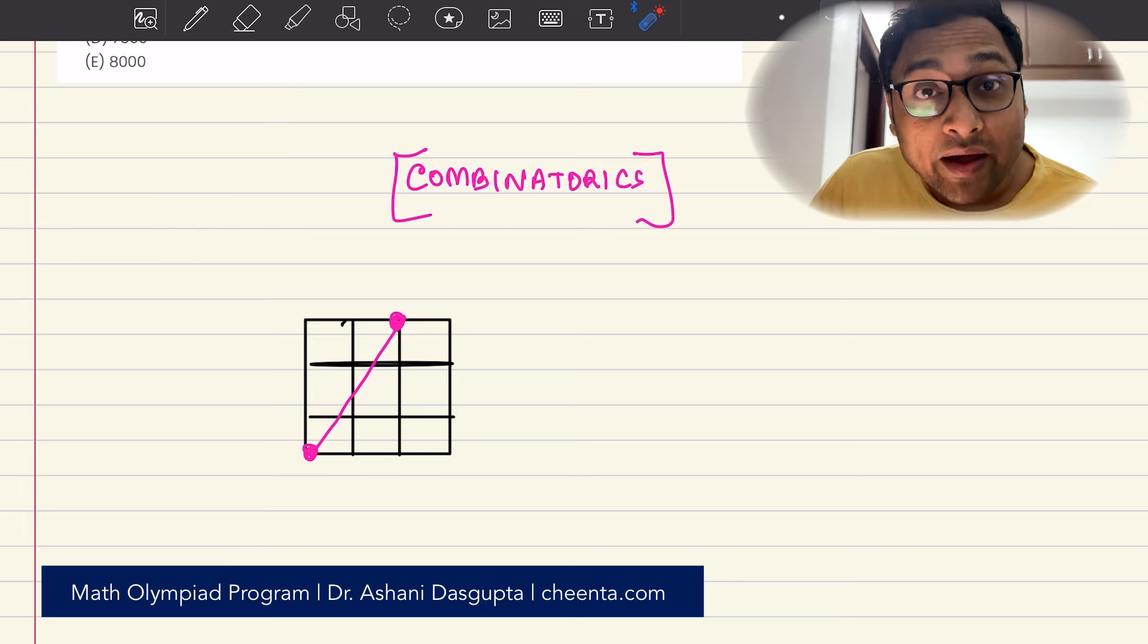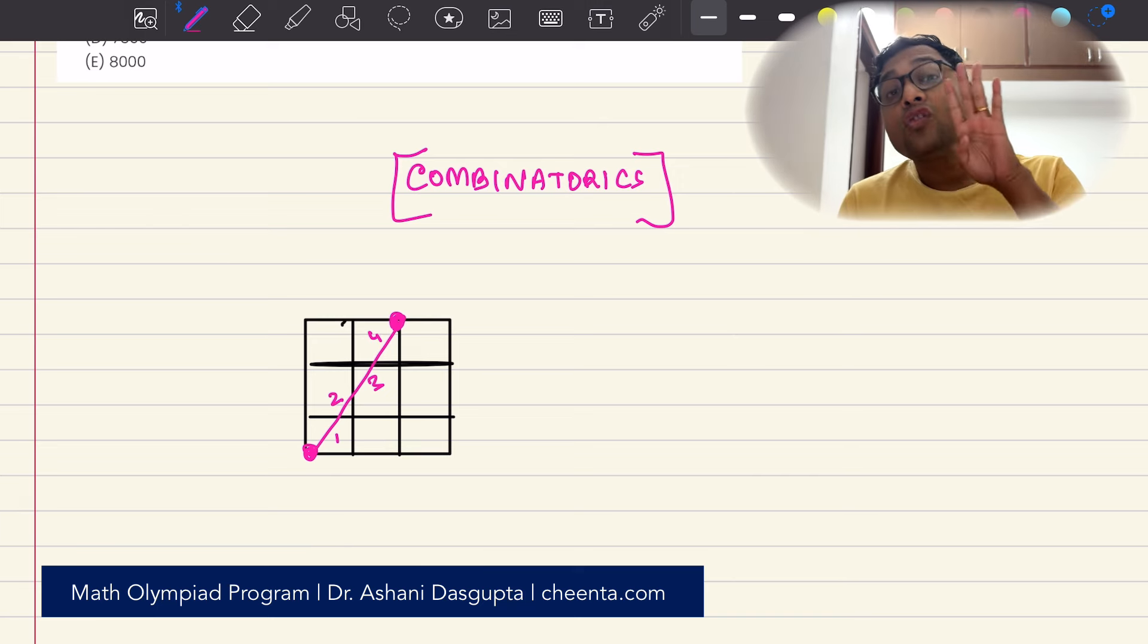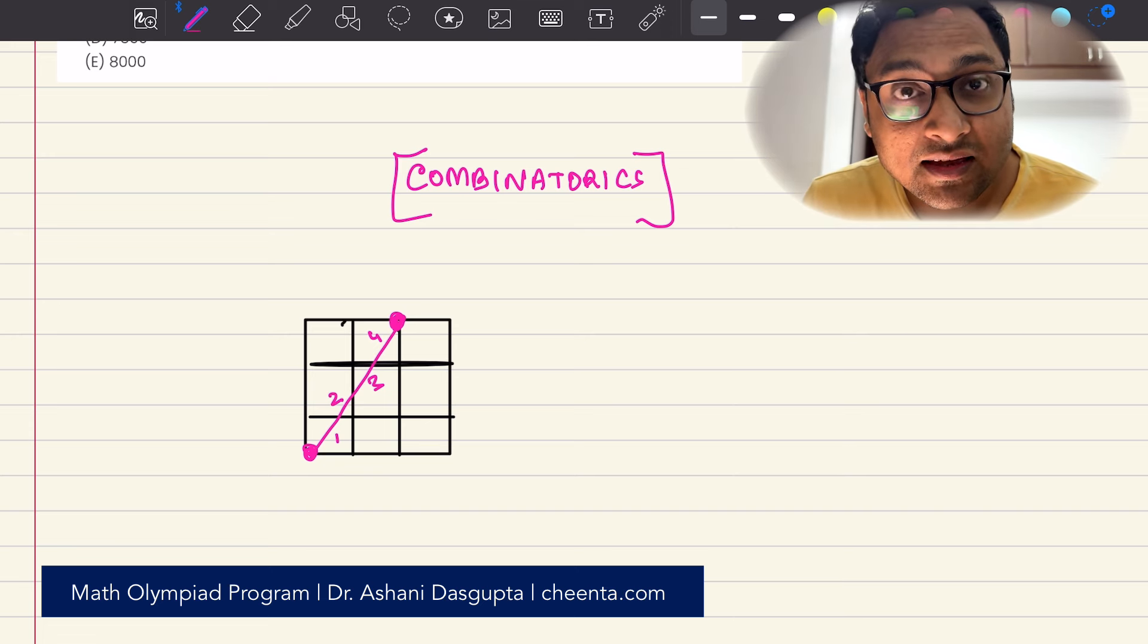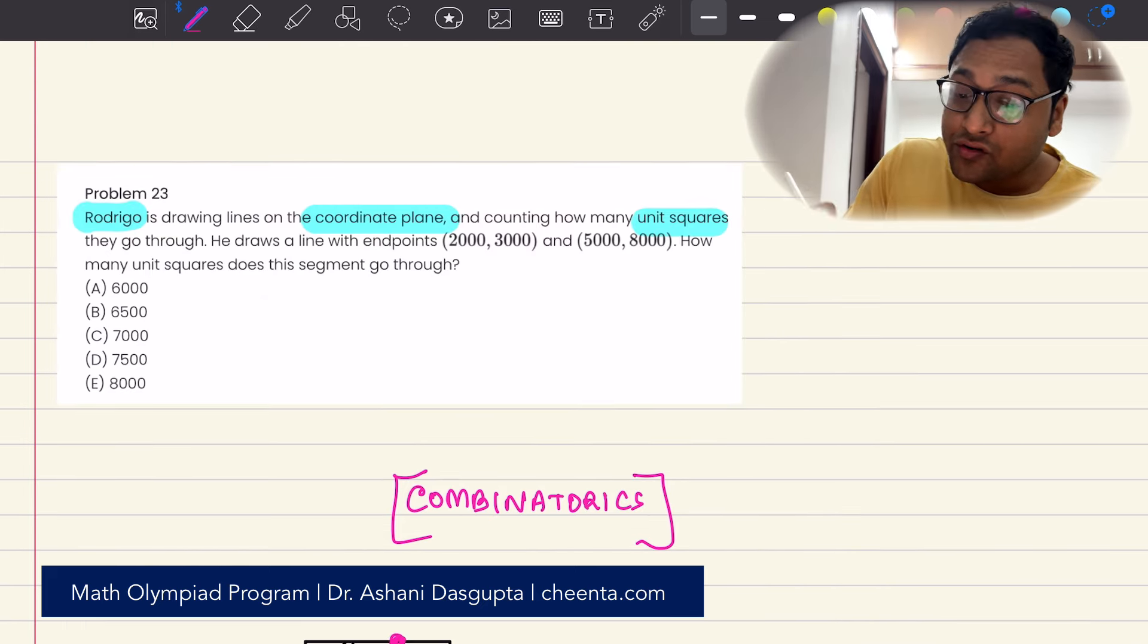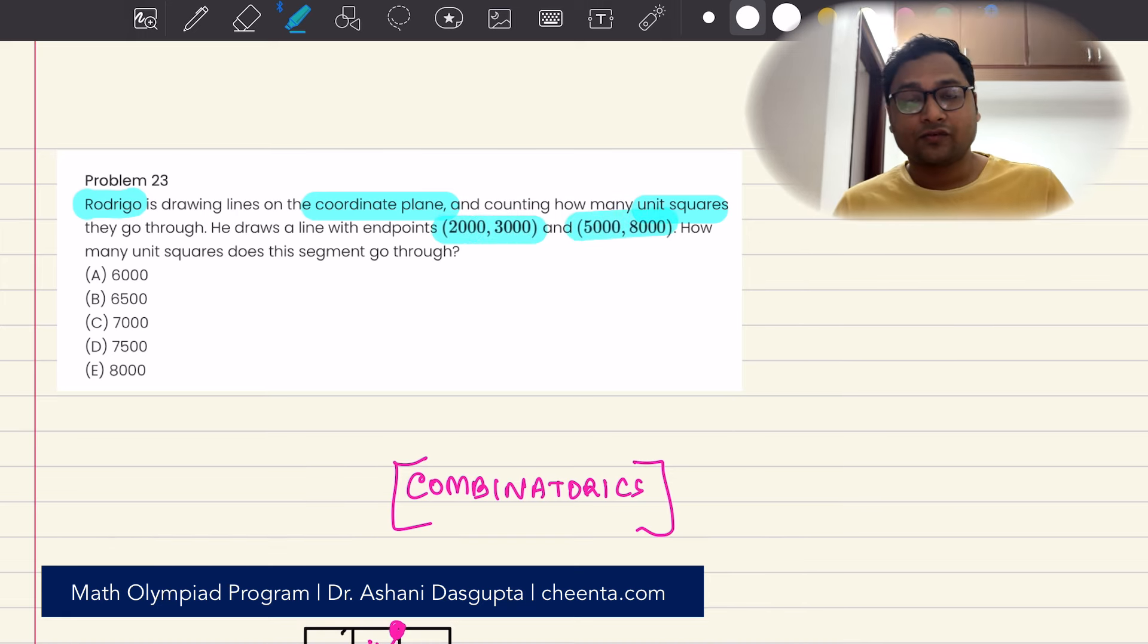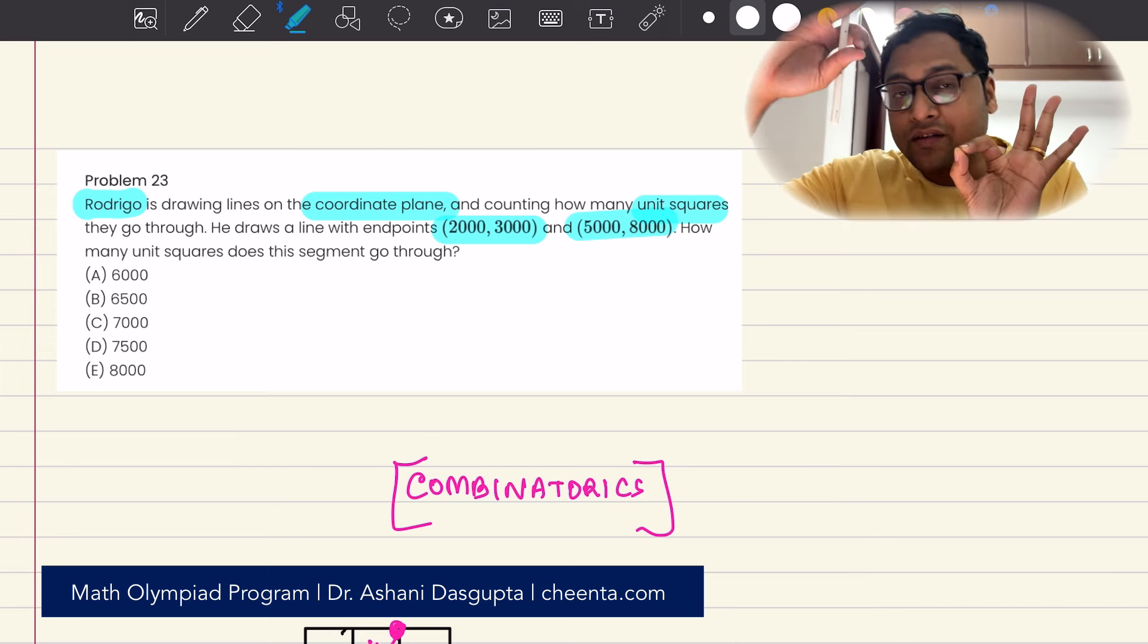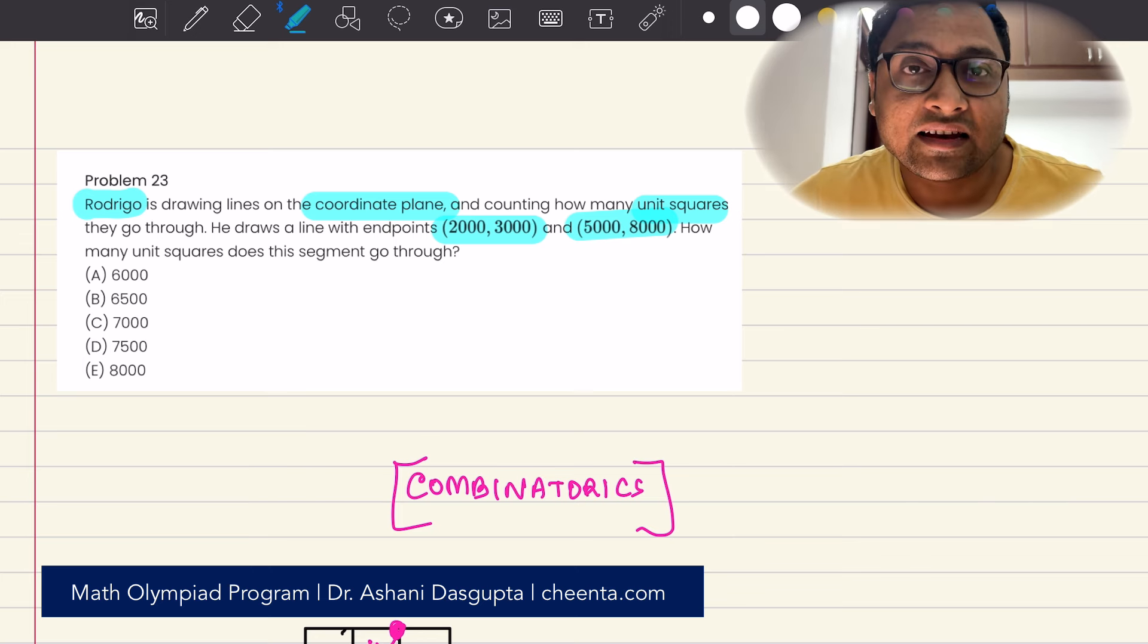Now, let's count the number of squares this particular line has passed through. Here is one, here is two, here is three and here is four. So there are four squares that this particular line is passing through. The question is this: if Rodrigo draws a line from 2000, 3000 to 5000, 8000, how many squares will that line pass through?